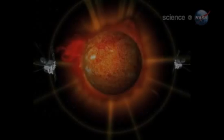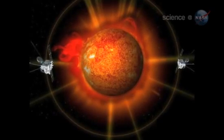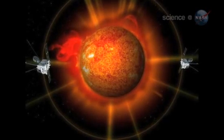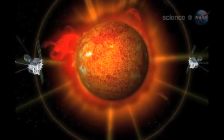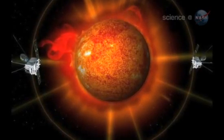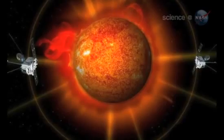NASA's twin STEREO probes also monitored the comet's approach. With three points of view, SOHO plus STEREO A and STEREO B, researchers could get a good fix of the comet's orbit. It was definitely a Kreutz-sungrazer, says Battams.